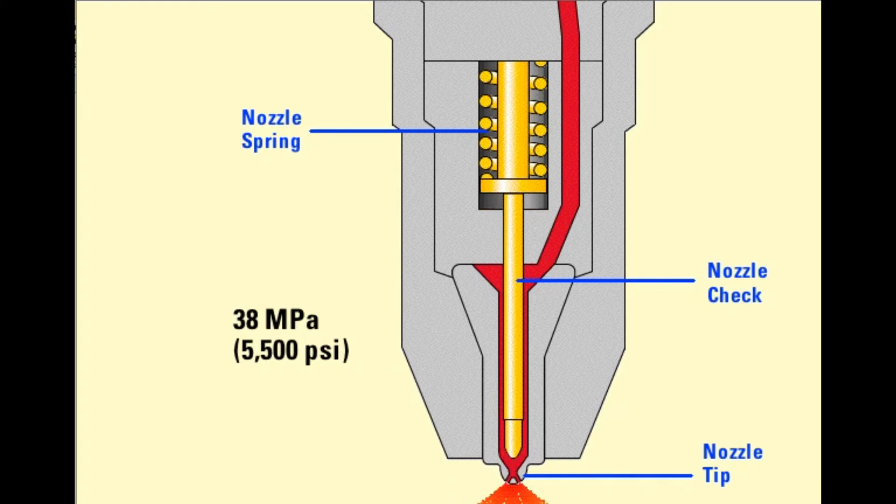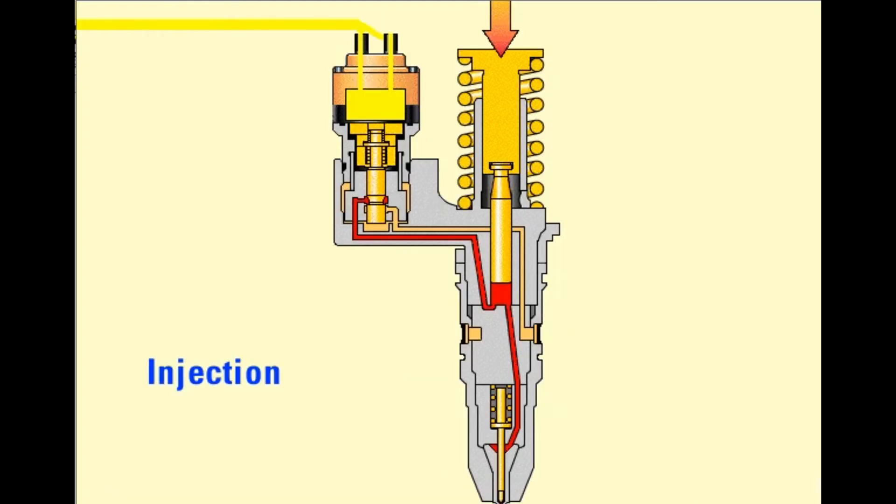Injection pressure continues to build very rapidly until the same volume of fuel pumping out of the plunger cavity sprays from the tip. Injection occurs as long as the plunger continues to move down and the energized solenoid holds the poppet closed.